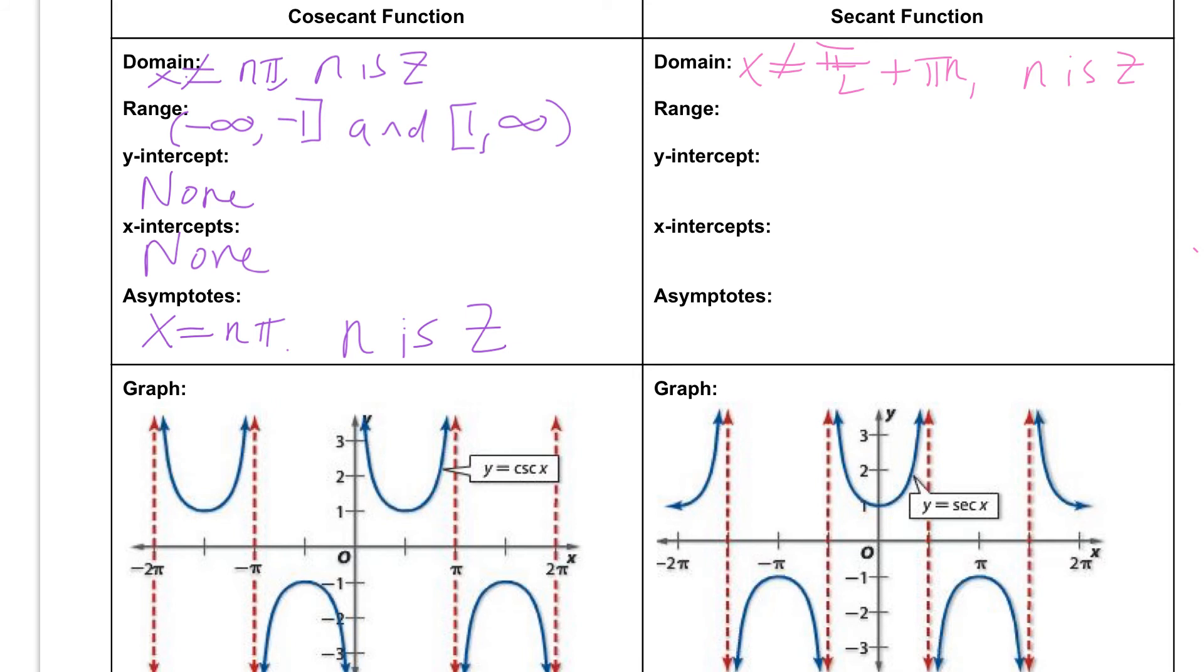And our range, our y-values are going to be the same as our cosecant function. It's not going to go anywhere in between that negative one and positive one, but it will happen everywhere else. So we say it's going from negative infinity to negative one including it and from one to infinity.